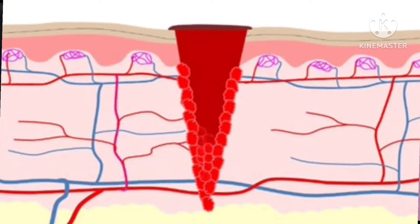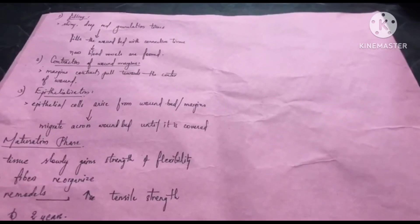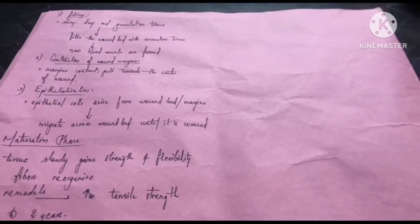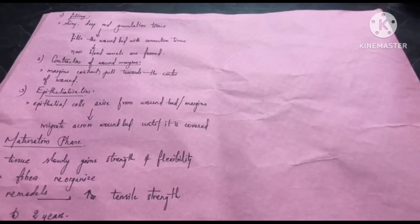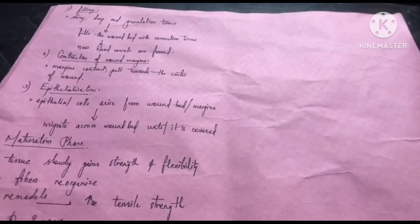Certain factors can interrupt the wound healing process. Local factors include moisture, infection, and age. Systemic factors include diabetes mellitus and cancer. These factors can significantly interrupt and delay the wound healing process.